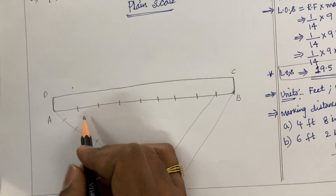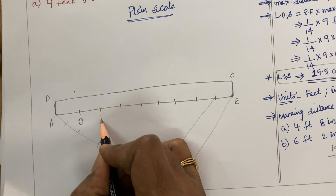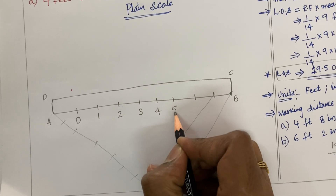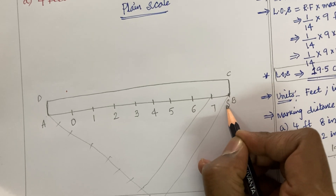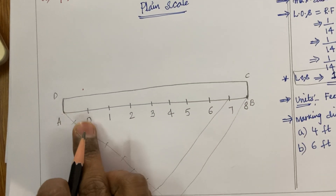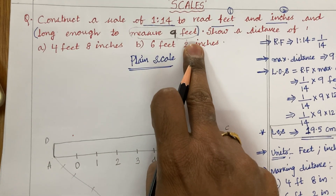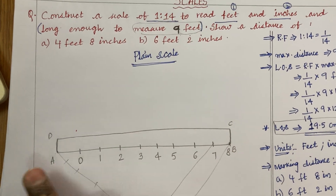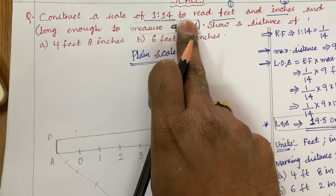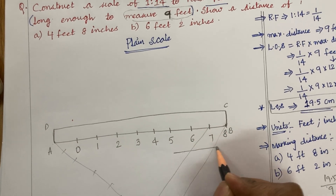The first division to the left of 0 — next to A — needs to be marked as 0, and then going right: 1 foot, 2 feet, 3, 4, 5, 6, 7, and 8. Along with this first box, 0 to A is also 1 foot, making 9 feet total. This is how the scale is long enough to measure till 9 feet, so this scale reads from 0 to 8 as the feet scale — the primary unit.